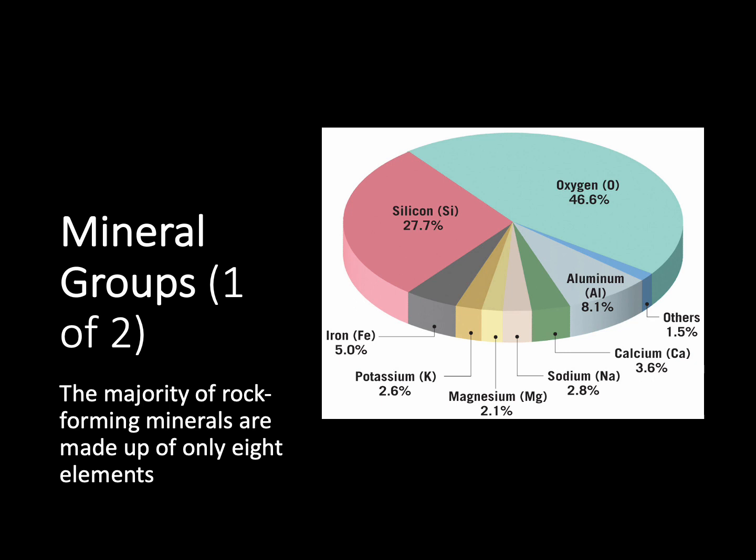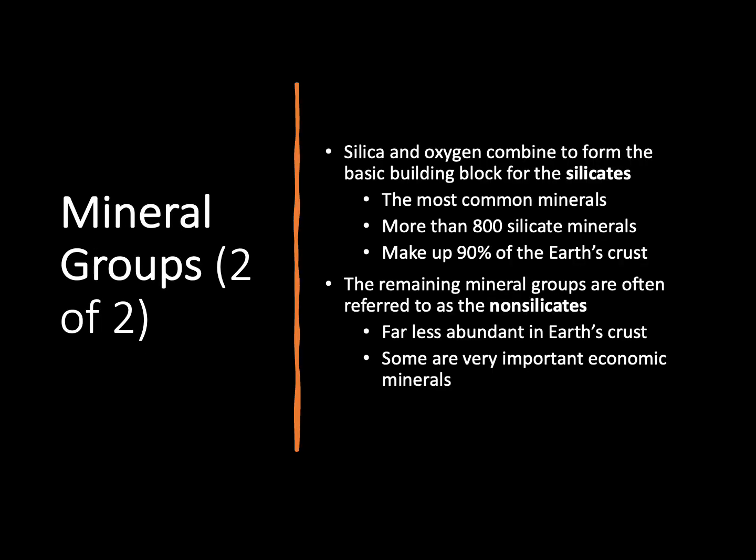We also have some metals — iron and magnesium — as well as some salts like potassium and sodium inside our crust. Because silicon and oxygen make up about 75% of our crust, they form our most common minerals on our planet. We call these the silicate minerals — minerals that have both silicon and oxygen in them. On our planet, we have more than 800 silicate minerals that together make up over 90% of our crust.